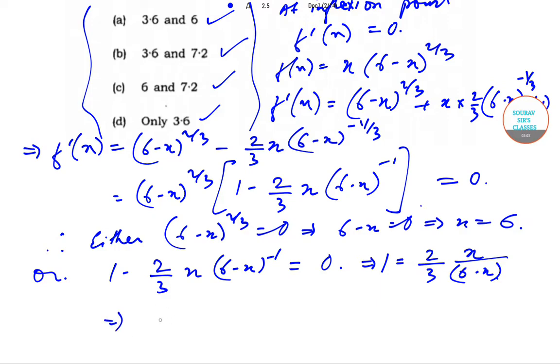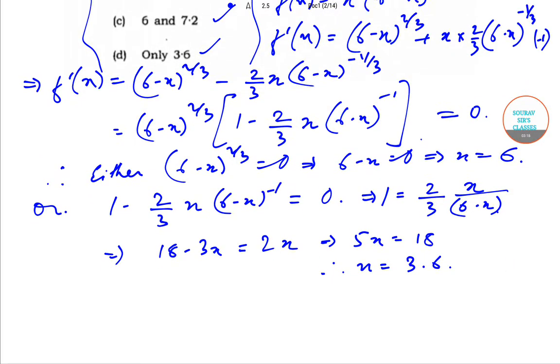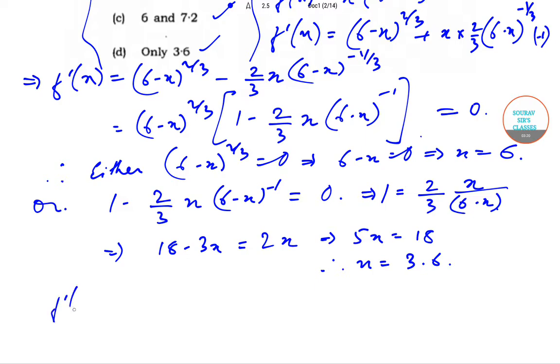That will imply that we can write it as 18 - 3x = 2x. This will imply that 5x = 18, and this will imply that x = 3.6.